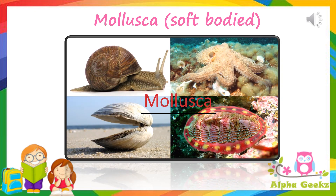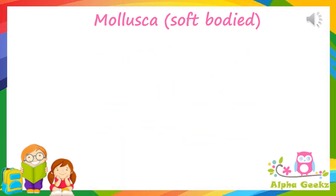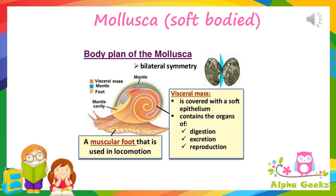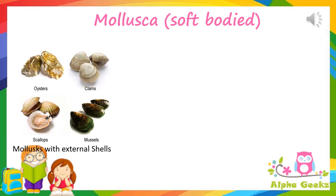Mollusca: Mollusca is the second largest phylum of invertebrate animals after Arthropoda. These animals have a soft body lacking segments, usually enclosed in a shell. Members of this phylum are known as molluscs. Molluscs are the largest marine animals, though some also live in freshwater and terrestrial habitats. Molluscs have a distinct head, muscular foot, and a visceral hump. All molluscs have a mantle, a thick fold of tissue that covers the internal organs. Most molluscs have an external or internal shell, and some are without one. These shells enclose, support, and protect the soft parts of the animal.